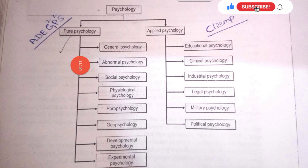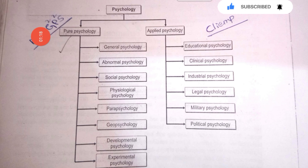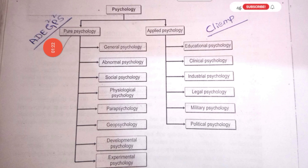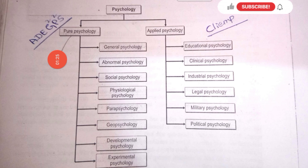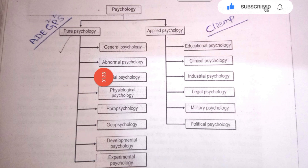In GPS: A is Abnormal Psychology, D is Developmental Psychology, E is Experimental Psychology, and G is Gender Psychology. G is also Geo Psychology, P is Parapsychology, next is Physiological Psychology, and S is Social Psychology.